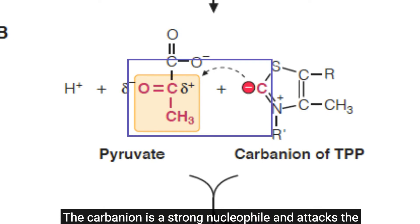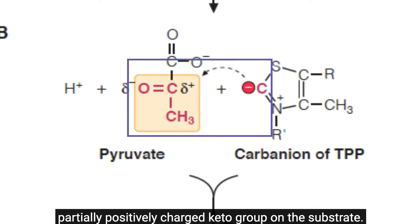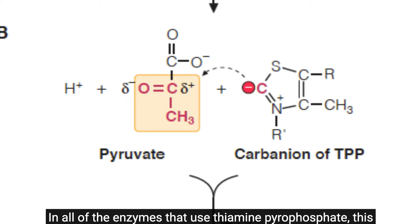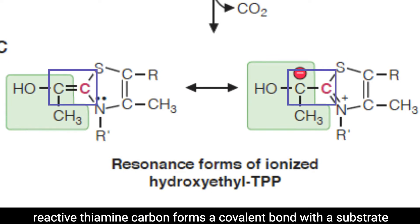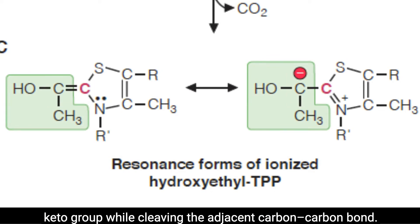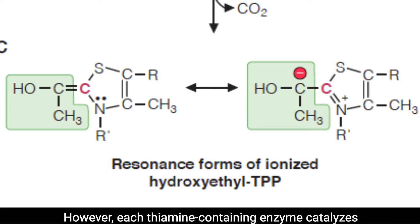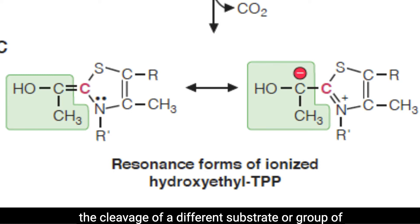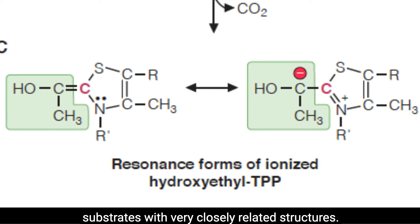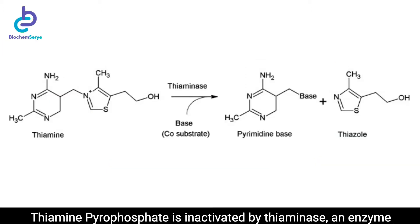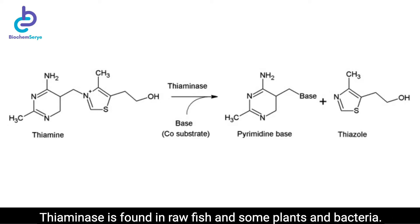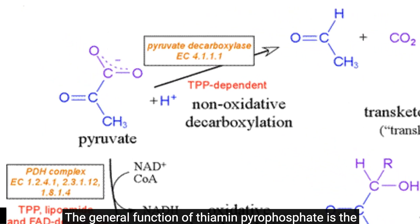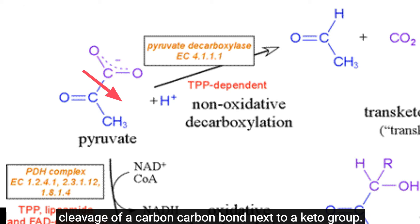The carbanion is a strong nucleophile and attacks the partially positively charged keto group on the substrate. In all enzymes that use thiamine pyrophosphate, this reactive thiamine carbon forms a covalent bond with the substrate keto group while cleaving the adjacent carbon-carbon bond. Thiamine pyrophosphate is inactivated by thiaminase, an enzyme that metabolizes thiamine into two molecular parts. Thiaminase is found in raw fish and some plants and bacteria.